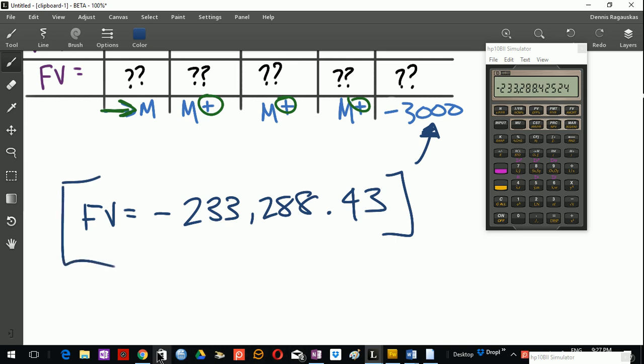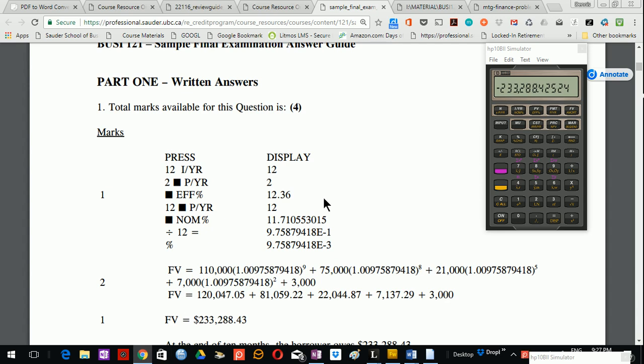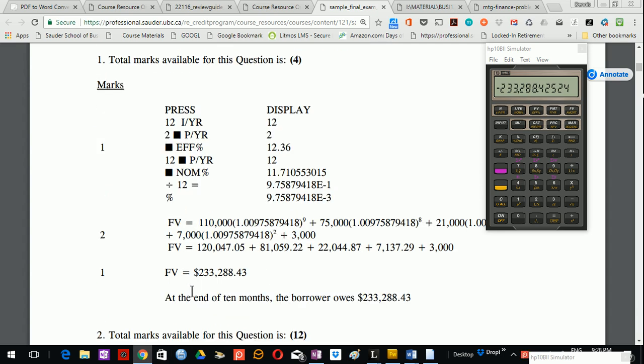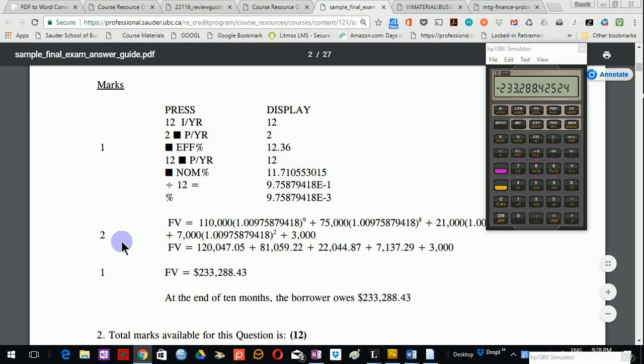Let's just go to the answer guide and make sure we're right here. So future value. So you can find this on your course resources page. So future value indeed is $233,284.43. And this is a pretty straightforward four marks.